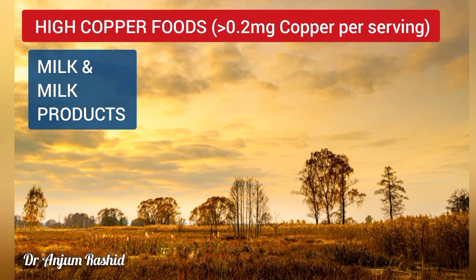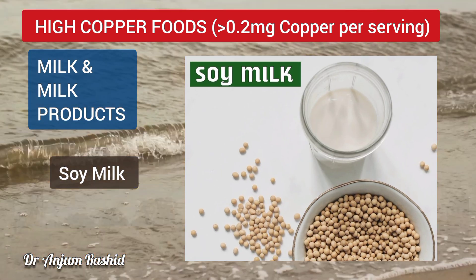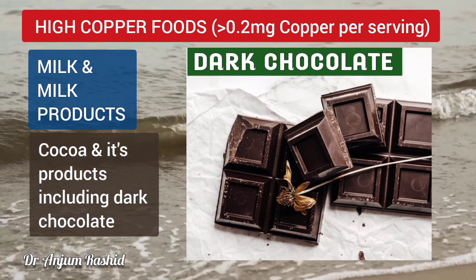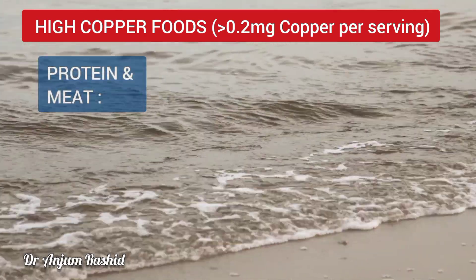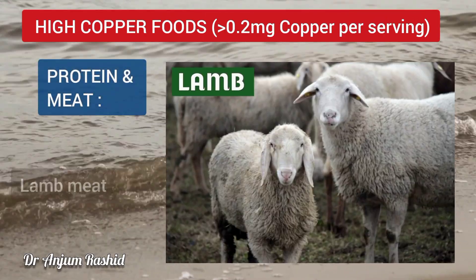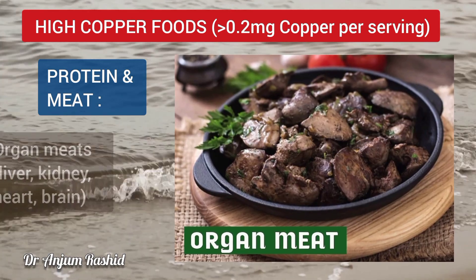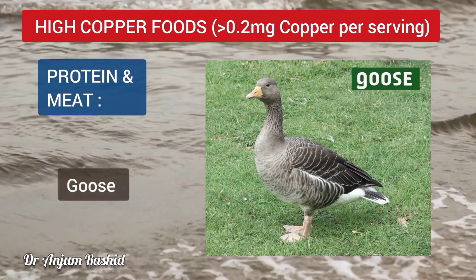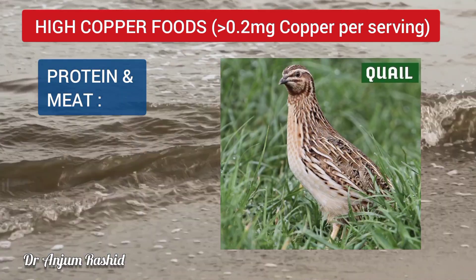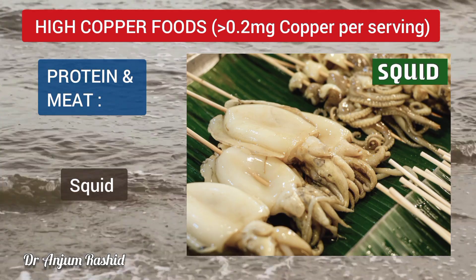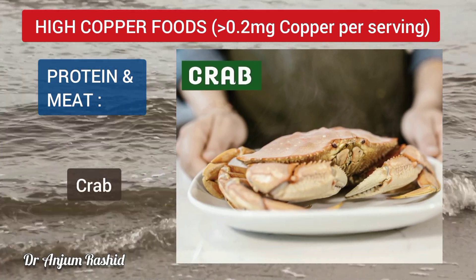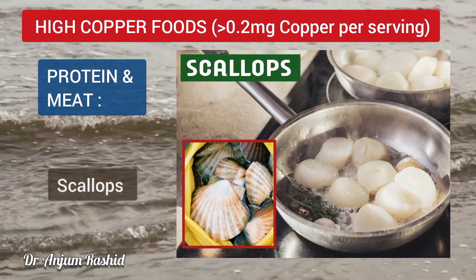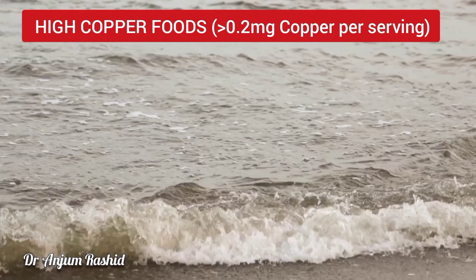High copper milk and milk products to be avoided include soy milk, cocoa and its products including dark chocolate. High copper protein and meat sources include lamb, organ meats such as liver, kidney, heart, and brain, as well as goose, duck, quail, squid, clams, crab, oysters, prawns, lobster, and scallops.